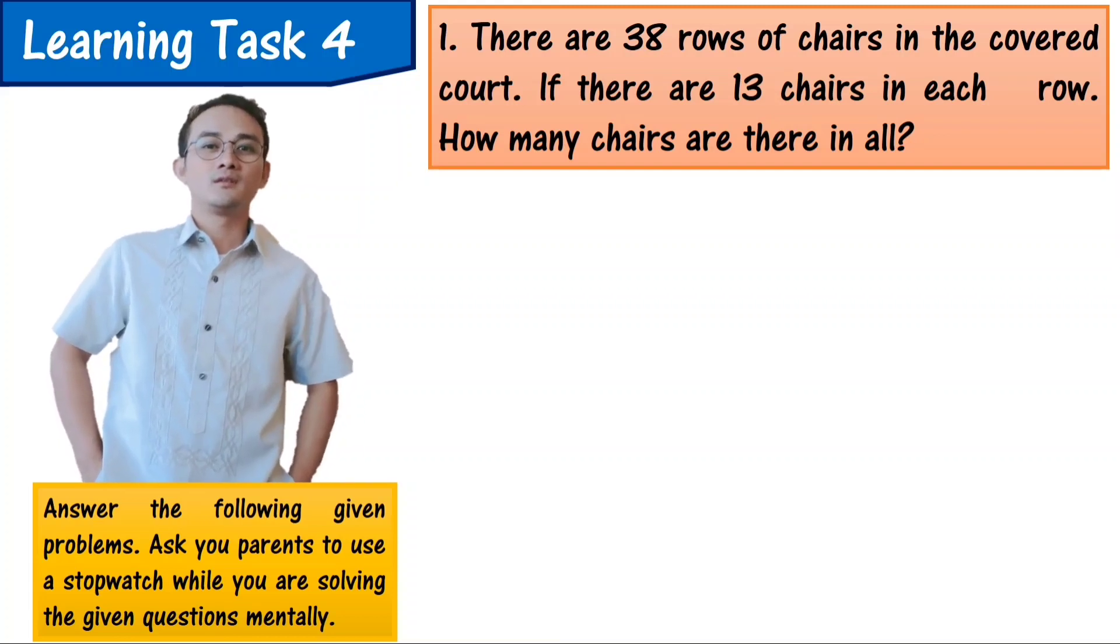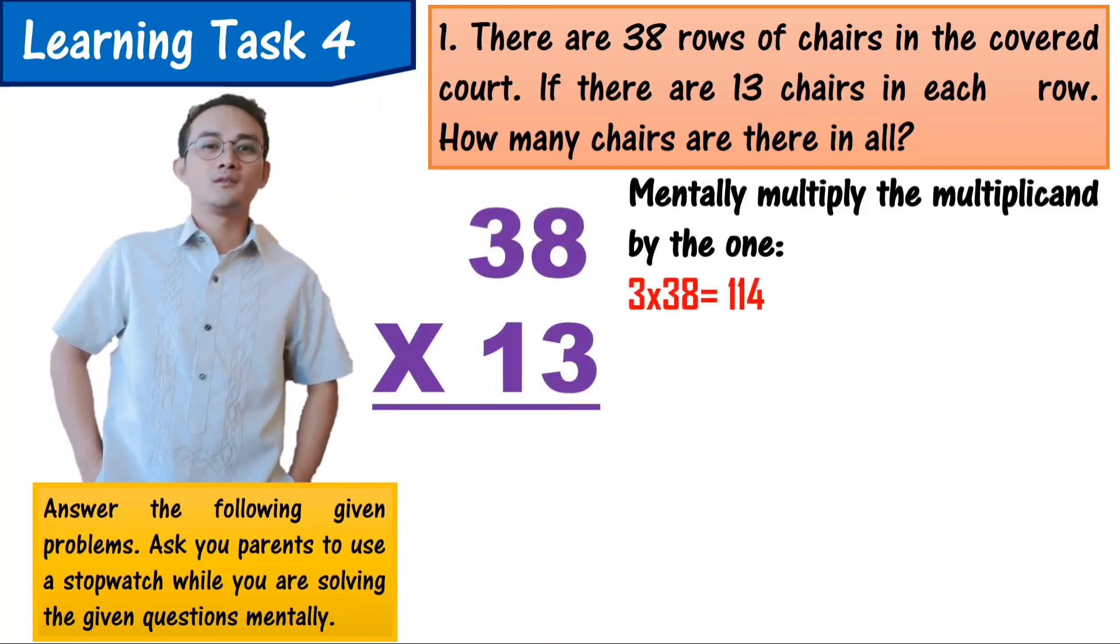Number 1: There are 38 rows of chairs in the covered court. If there are 13 chairs in each row, how many chairs are there in all? To answer 38 times 13 mentally, you need to mentally multiply the multiplicand which is 38 by the ones of the multiplier which is 3. 3 times 38 equals 114.